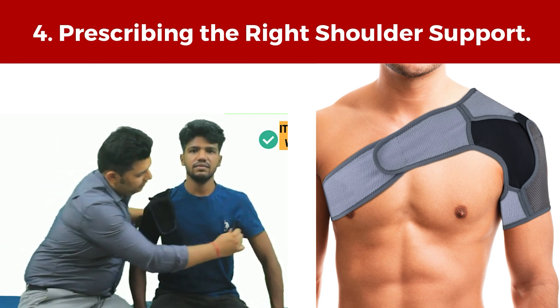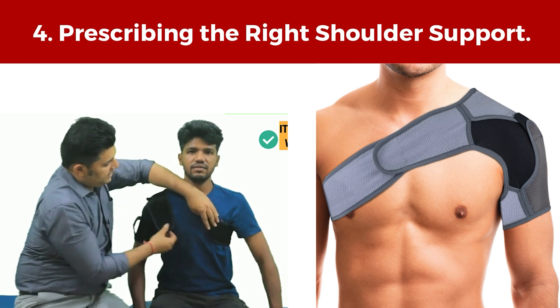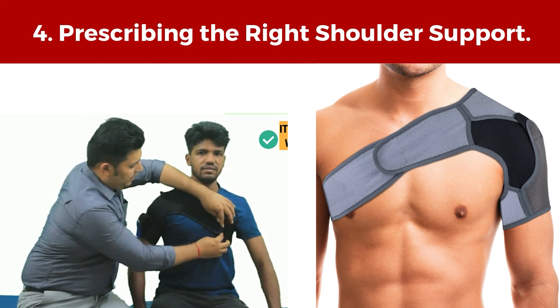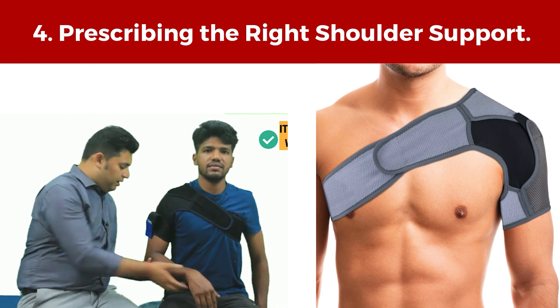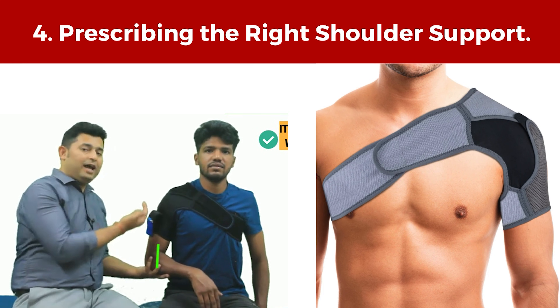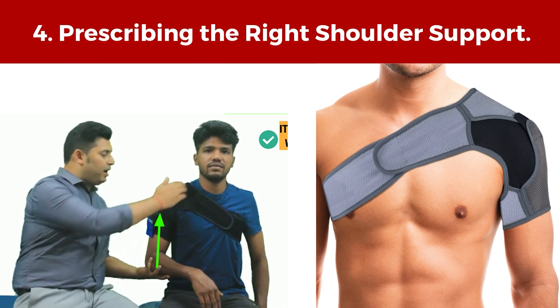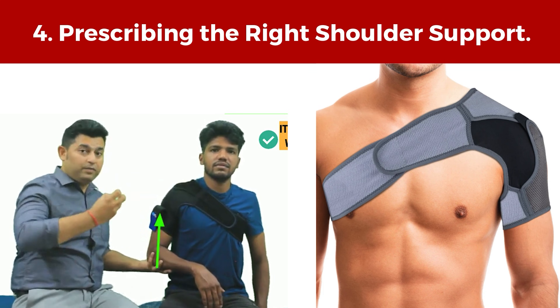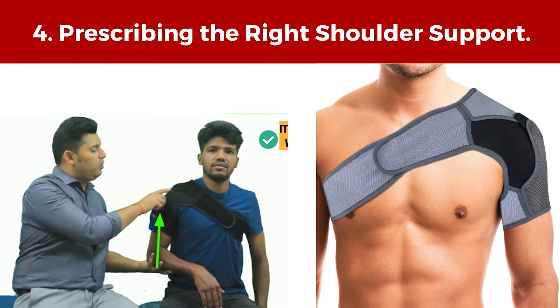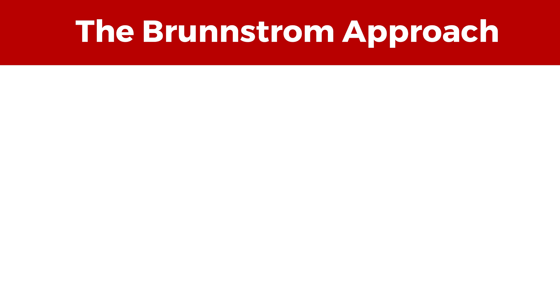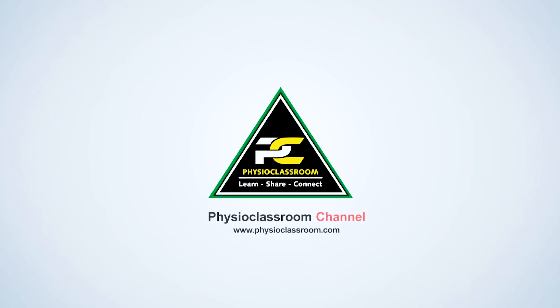There are many varieties of shoulder splints and supports available, but choosing the one which stabilizes it well is important. A link to the best shoulder support for stroke is given in the description. To watch this treatment in detail, check the Brunnstrom playlist on the Physio Classroom channel — the link is in the description. Thanks for watching.